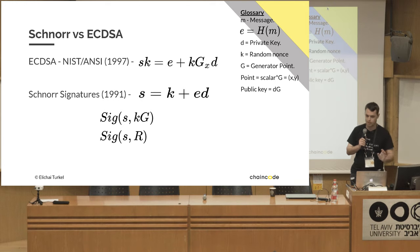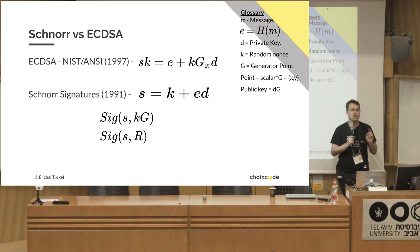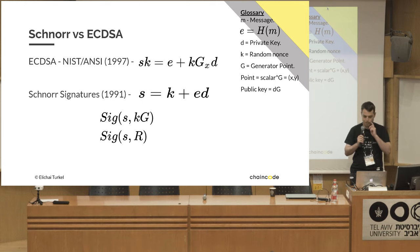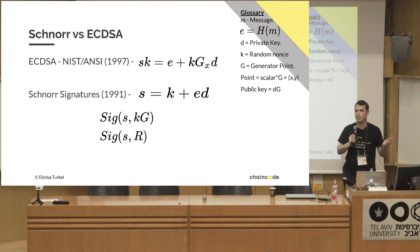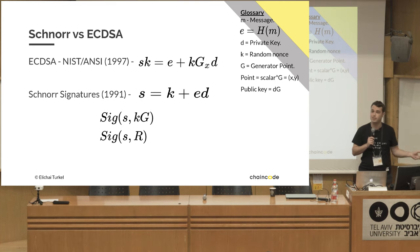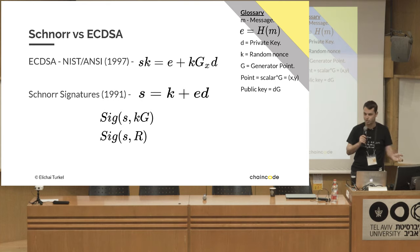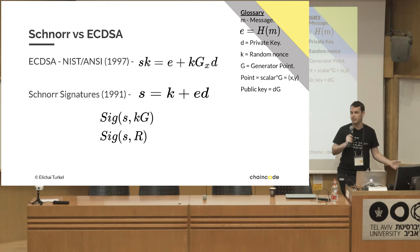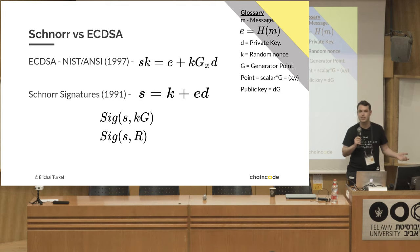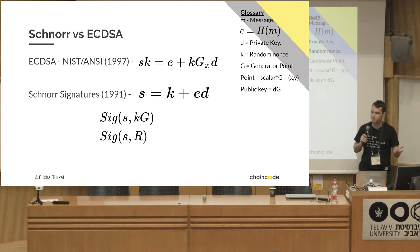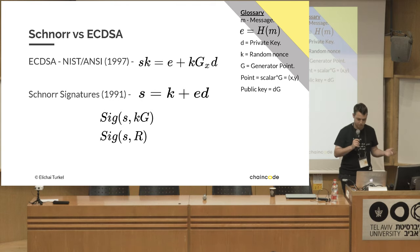The patent expired in 2008, and 2008 is the year before Satoshi published Bitcoin. But because Schnorr wasn't standardized, no one really used it, so there was no reason Satoshi would have used it.